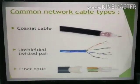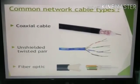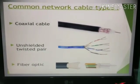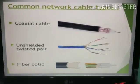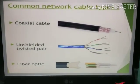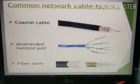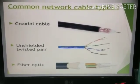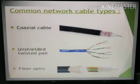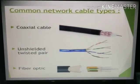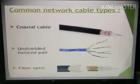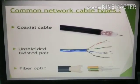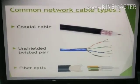Comparative analysis: when we compare twisted pair cable, coaxial cable, and optical fiber cable, we observe the data rate of twisted pair cable is 4 Mbps, whereas coaxial cable is 500 Mbps, and optical fiber has the highest data rate at 2 Gbps. By using fiber optical cable we can transfer a large amount of data at a time.